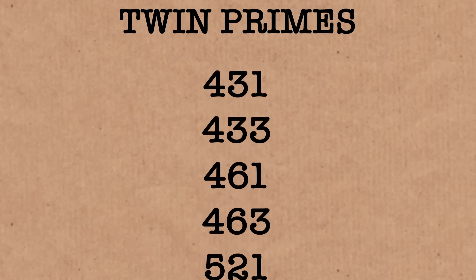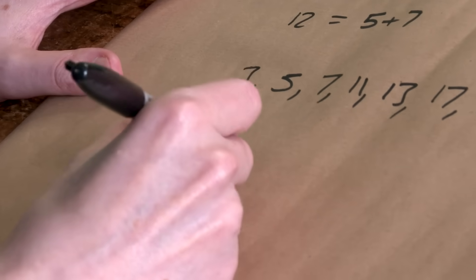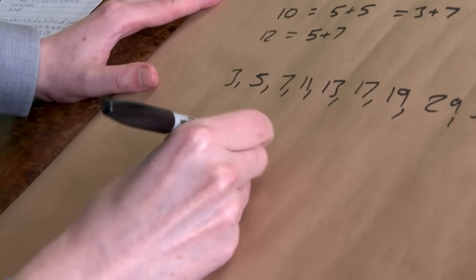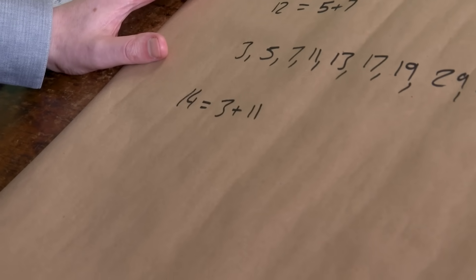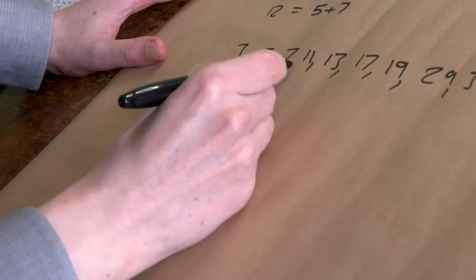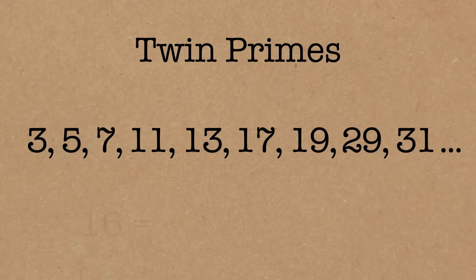Let's do 14. So 14 — 3 plus 11. Those are two twin primes from my list, 3 and 11 makes 14. Or you could do 7 plus 7. It doesn't have to be unique; there could be more than one way of doing it.